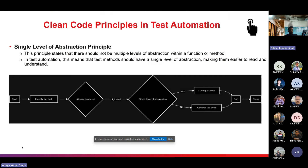The Single Level of Abstraction Principle states that there should not be multiple levels of abstraction within an inner function or method. In test automation, test methods should maintain a consistent level of abstraction — avoiding multiple layers of complexity within a single method. Each test method should focus on a specific level of detail, avoiding mixing high-level actions with low-level implementation details. By adhering to this principle, test methods become easier to read and understand; breaking down complex test scenarios into smaller, more focused methods for specific actions or assertions improves the maintainability of the entire test code base.